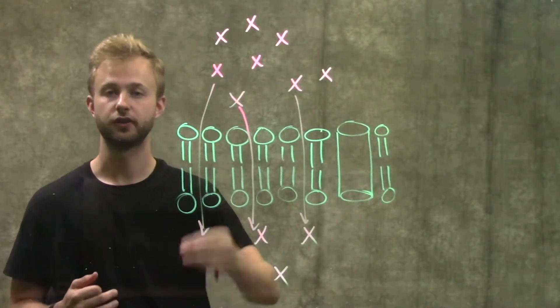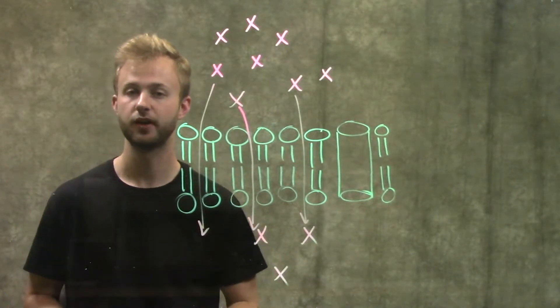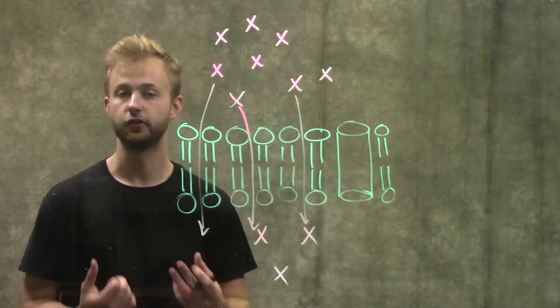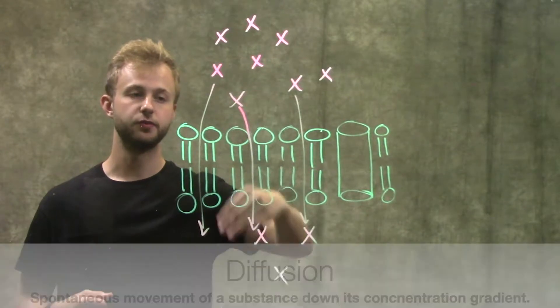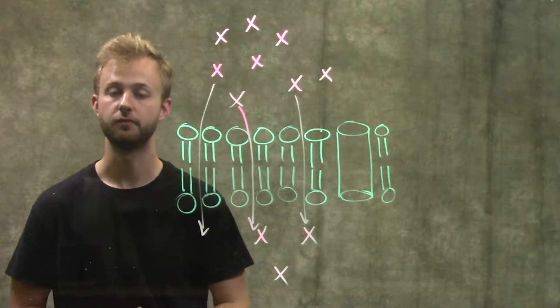This will happen until the concentrations on either side of this membrane are equal to one another, and then you'll have no more movement. This is called diffusion, when something just spreads out between two compartments until it's even on both sides.